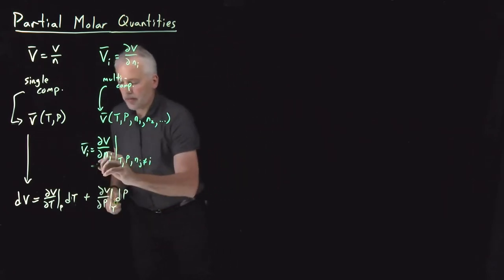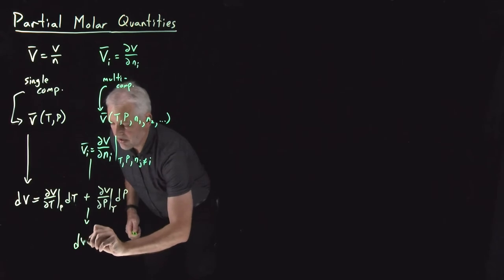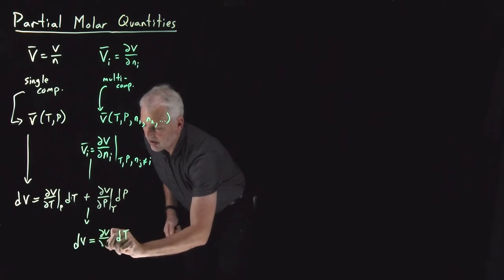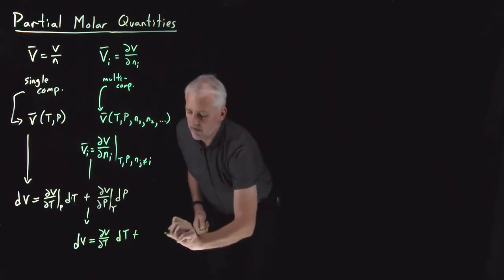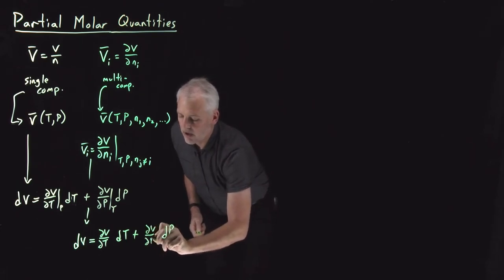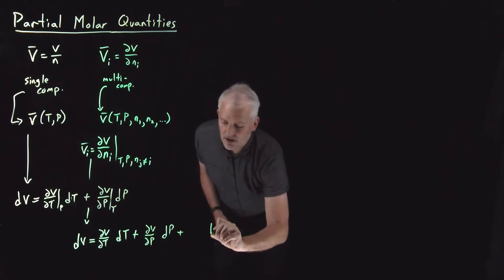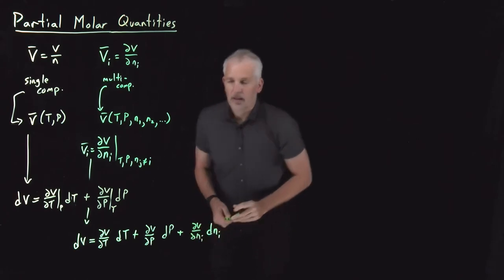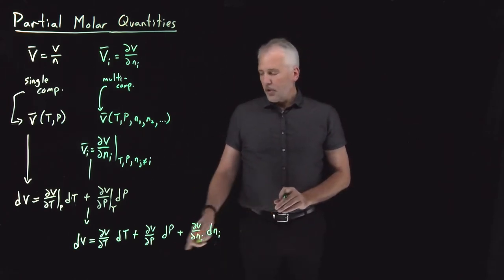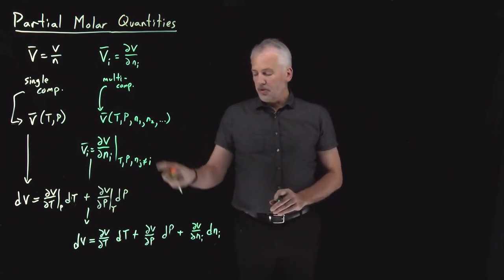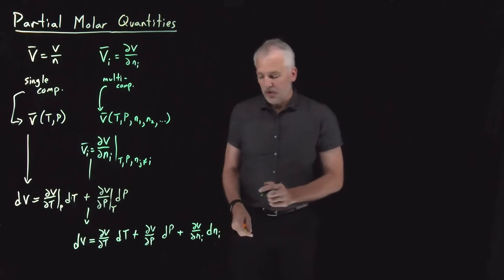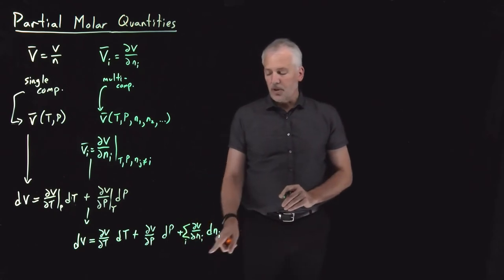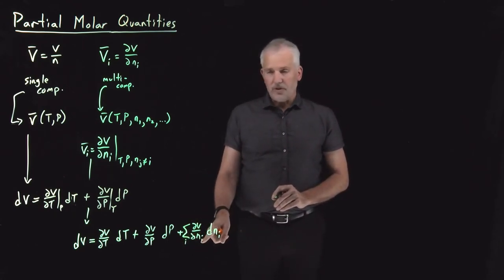The same type of expression is useful for multi-component systems, but in this case, to understand how the volume changes, we'd need to account for: a change in temperature changing the volume, a change in pressure changing the volume, and now also the fact that if I change the moles of some component, that will also change the volume. So the volume depends not just on T and P, but also on moles of component one, moles of component two, and so on — I have to sum terms for every component.